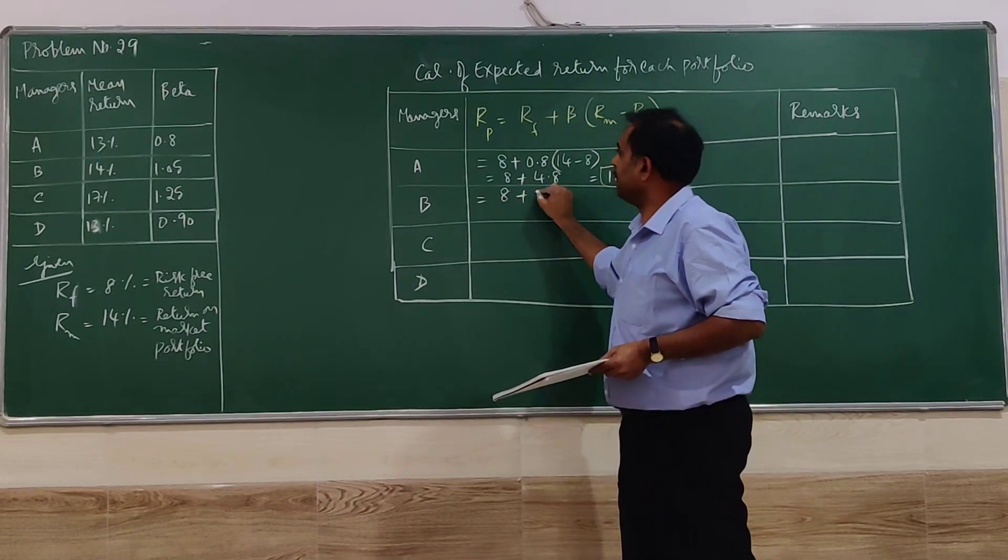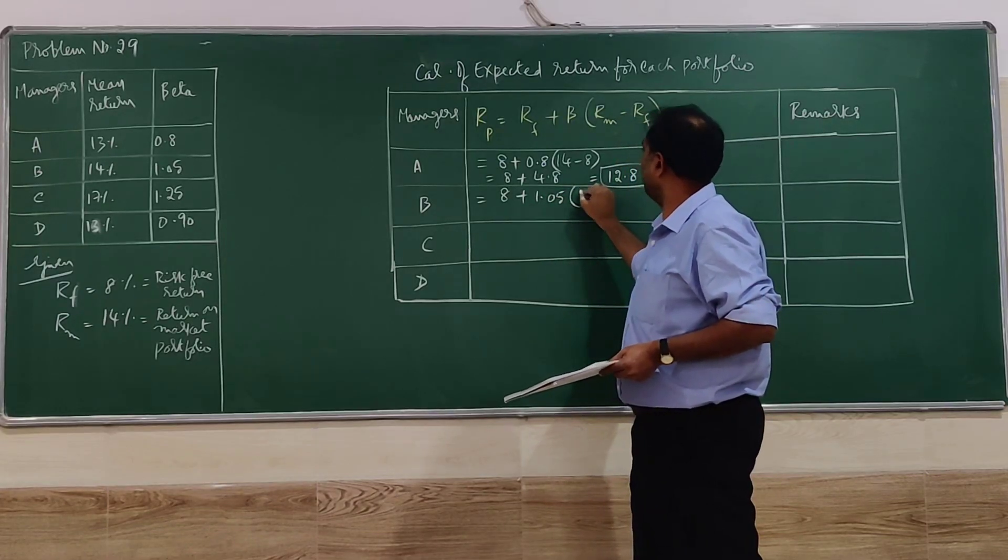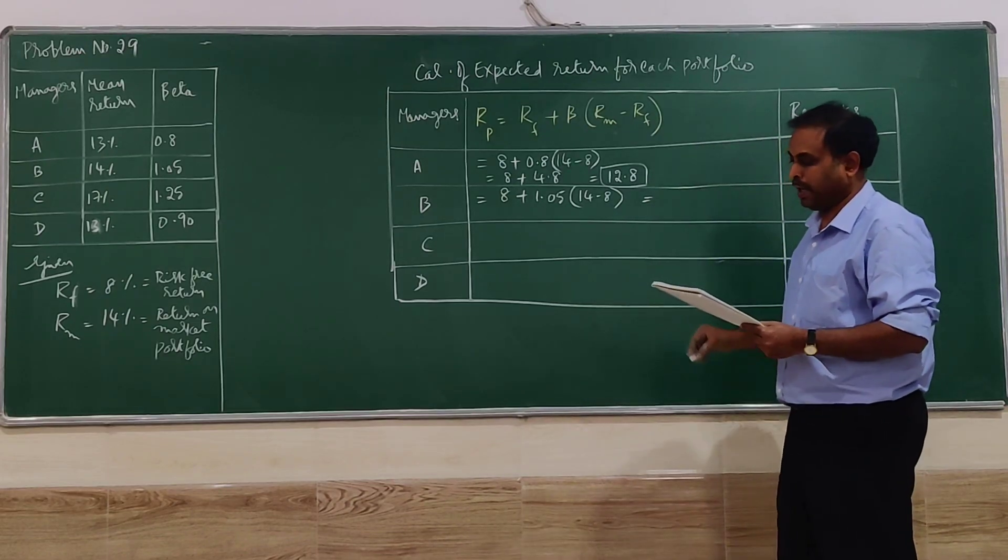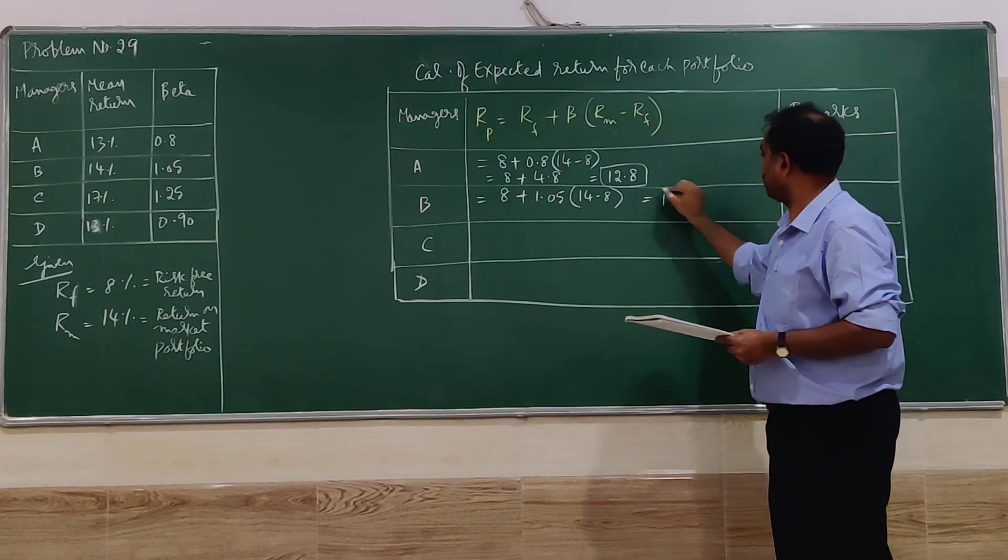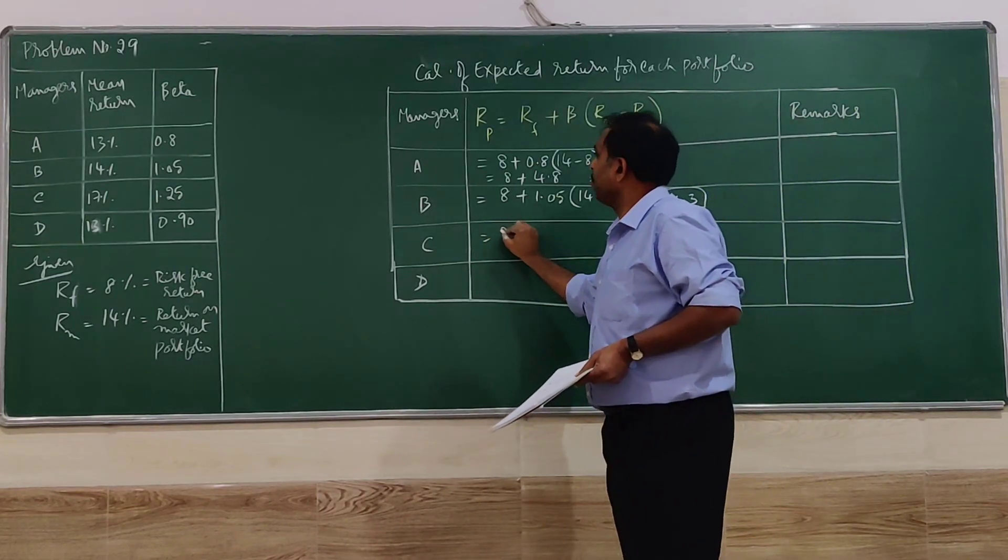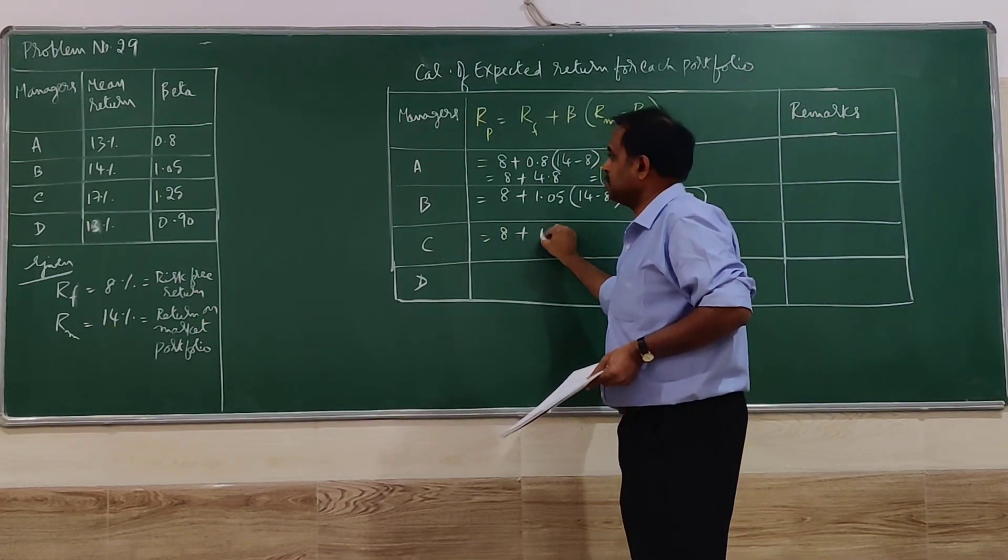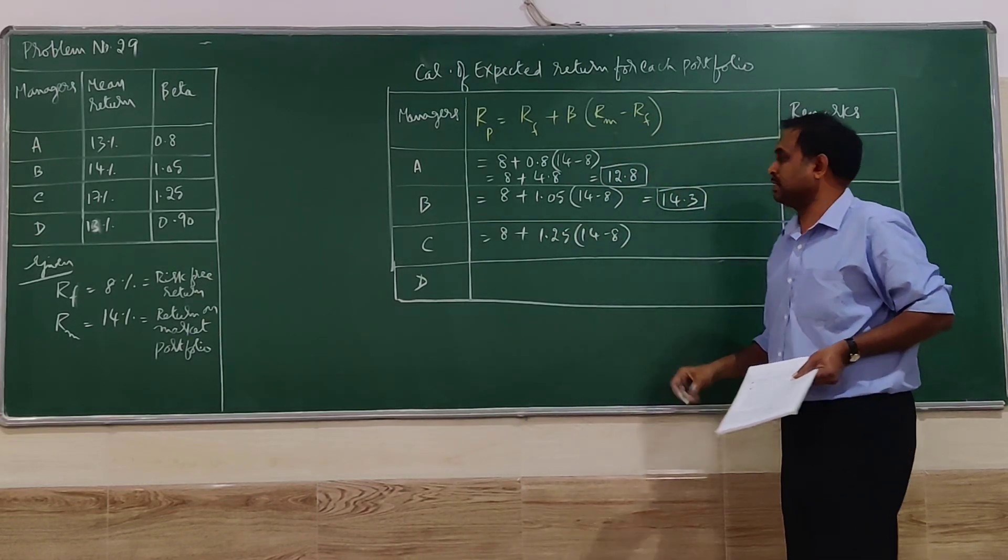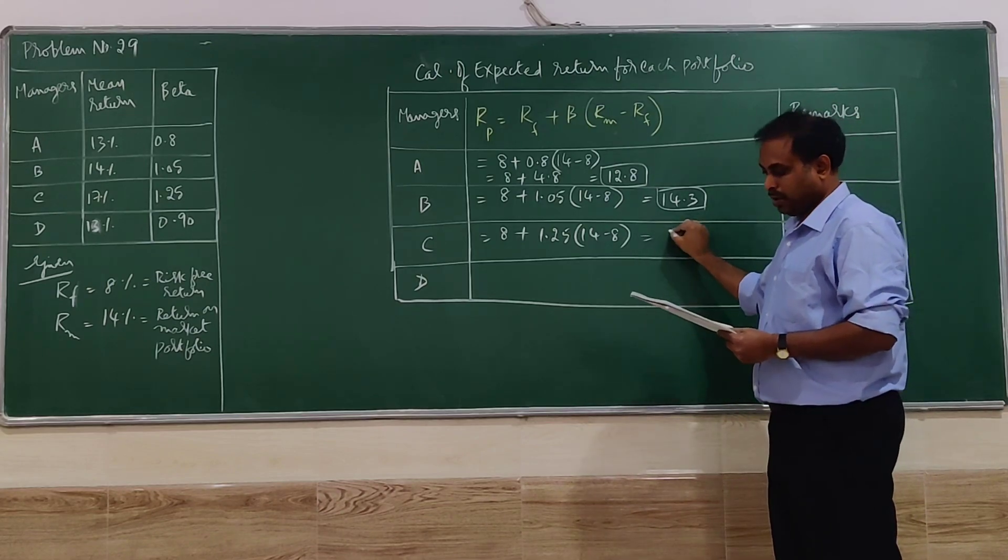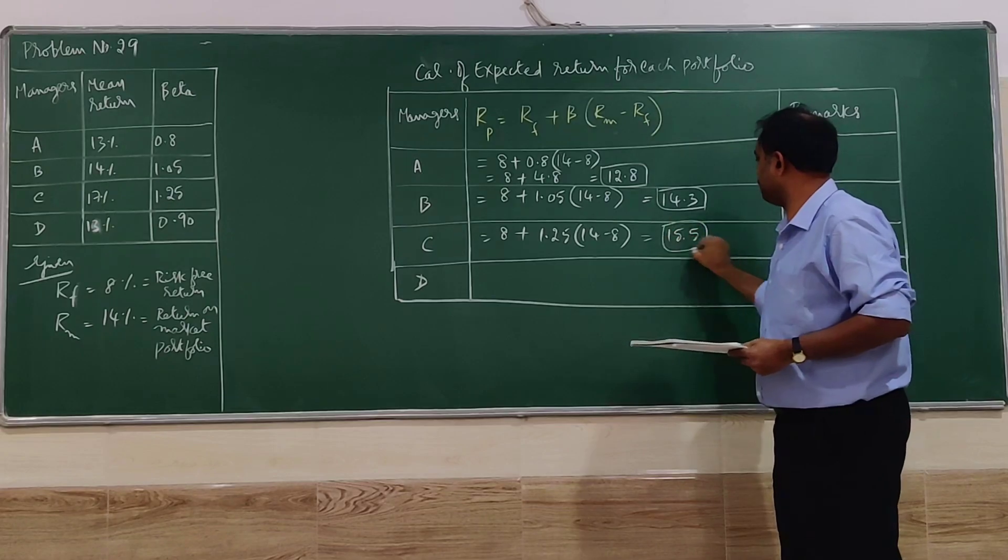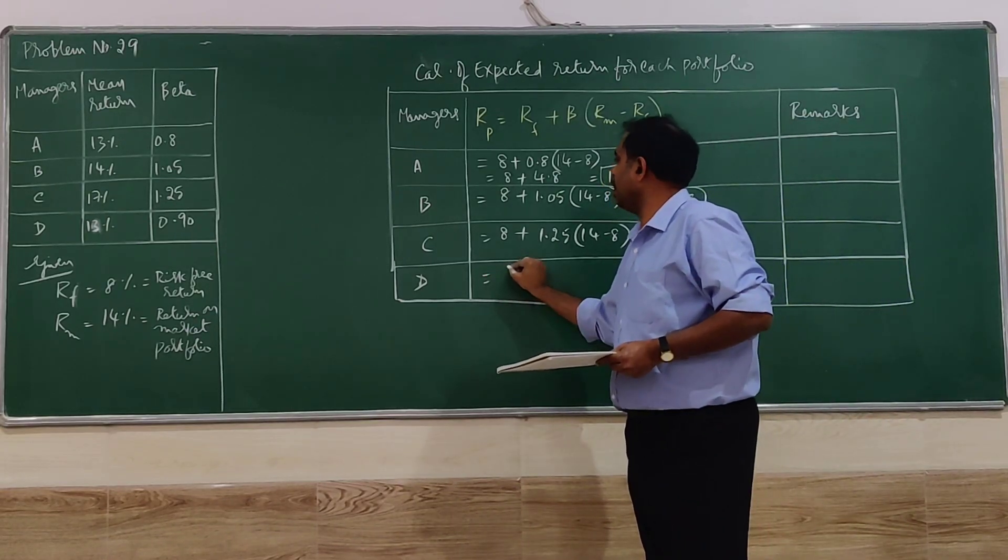Next for C: 8 plus 1.25, RF and RM remain the same, so it is going to be 15.5.